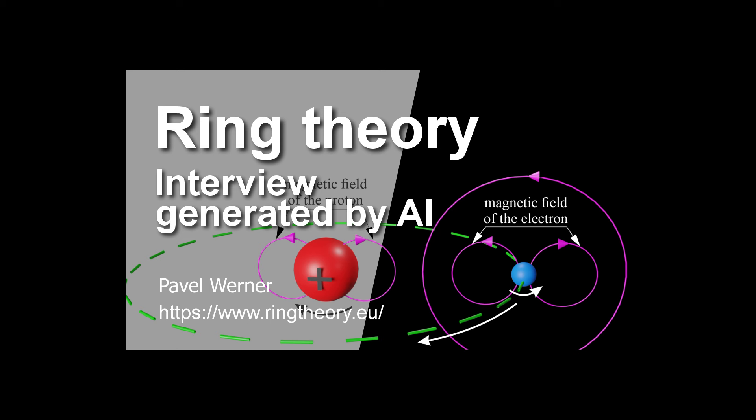Exactly, and that's what we're here to unpack today. So to jump right in, let's talk about the elephant in the room, or rather the tiny elephant in the atom, the nucleus. It's this super dense area packed with positive protons, right? But here's the thing that always bugged me. If those protons all have the same charge, shouldn't they just repel each other and send the whole nucleus flying apart?